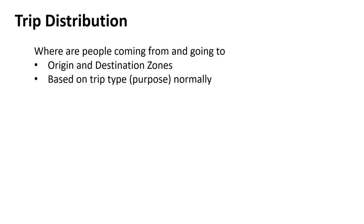The big piece of trip distribution is: where do people come from, where are they going, what zone do they come out of, and what zone are they going to? How many people are going or coming from zones is trip generation — based on, say, zone one having 1,000 single family homes with 1.5 people per home on average from the last census.